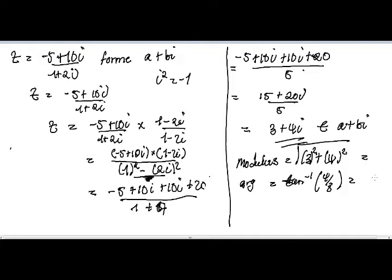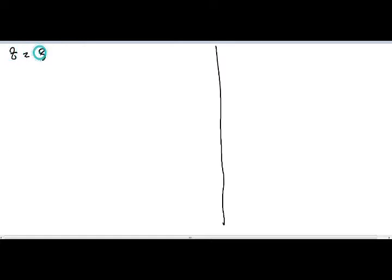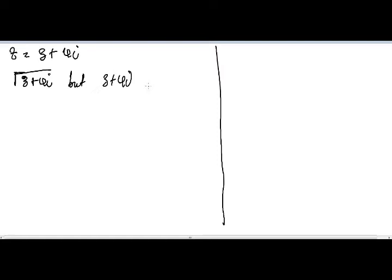There is also a part b of the equation where we are asked for the square root of z. Since z is now 3 + 4i after our manipulations, we are asking for the square root of (3 + 4i). We know that 3 + 4i is in the form a + bi, so we can say the square root of (3 + 4i) is equal to (a + bi).